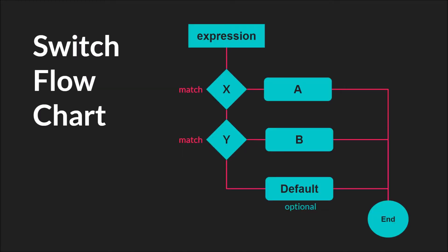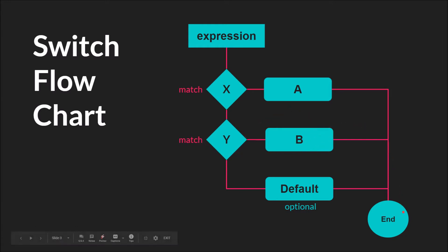Here we have a simple flowchart for a switch statement. Up here we have the expression that is evaluated. In most switch statements your expression is going to be a single variable, but it could be a function or something even longer. The expression gets evaluated and then its result will be compared first to this case. If it matches, it will go do this code and then finish. If it doesn't match, it'll come down here, compare itself, and if it matches, go do this code and end.